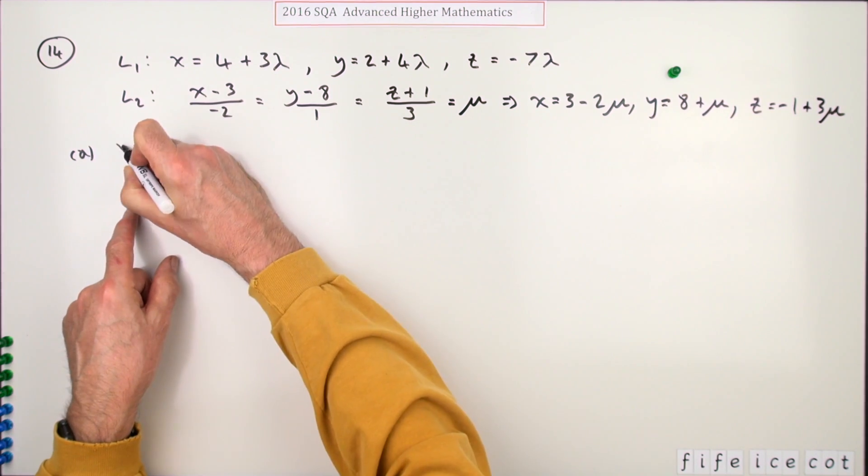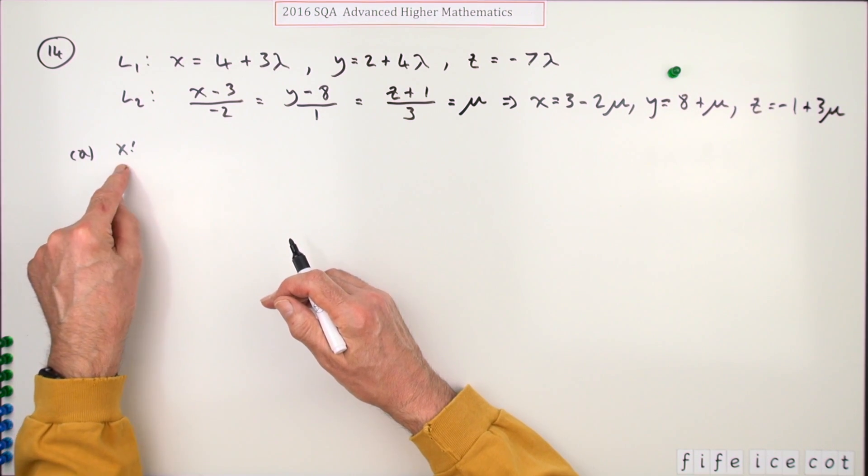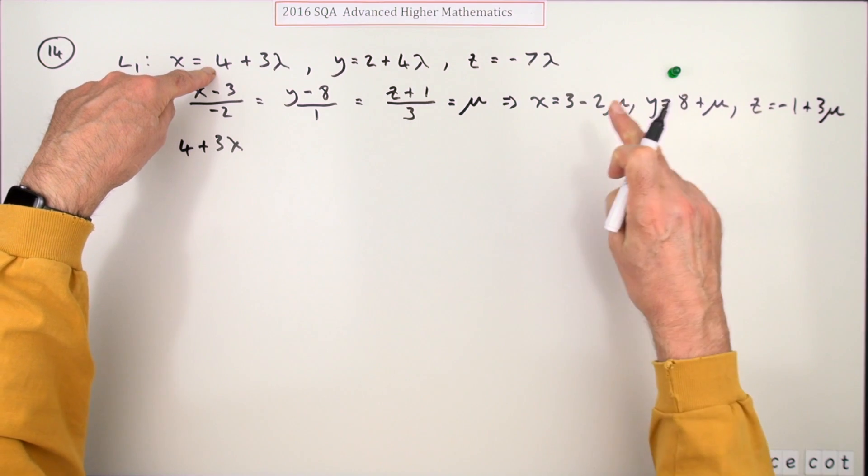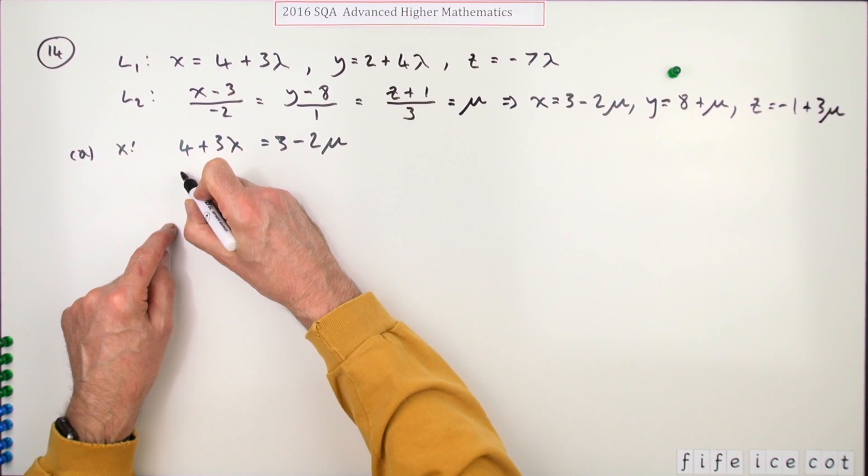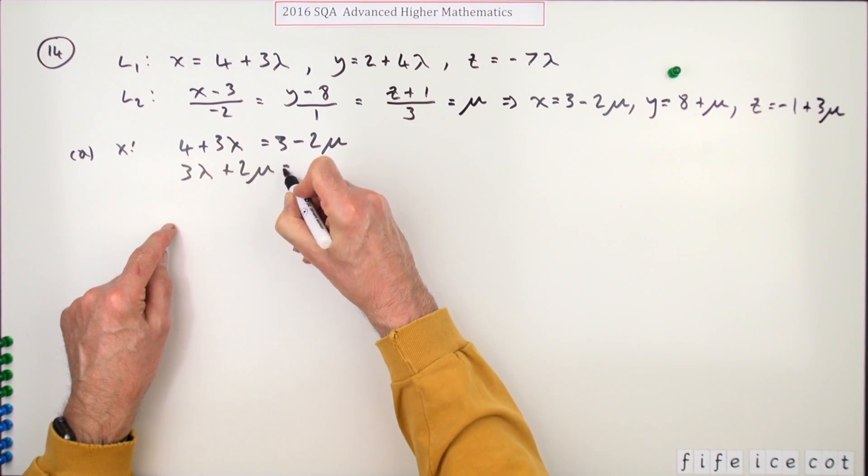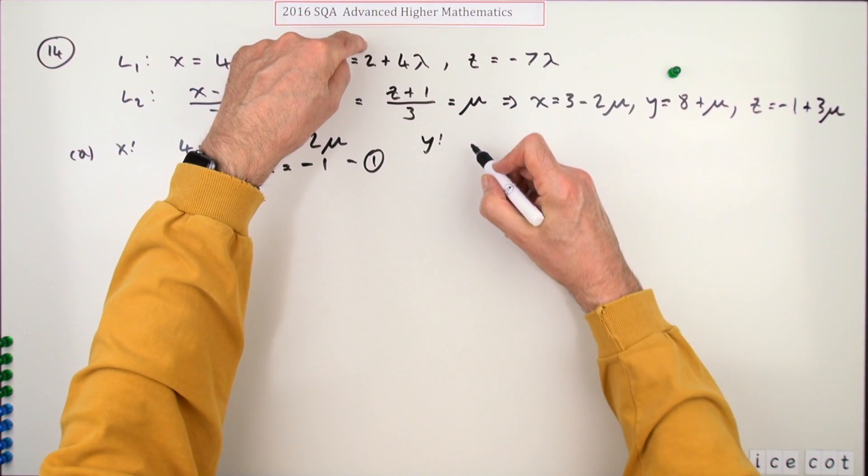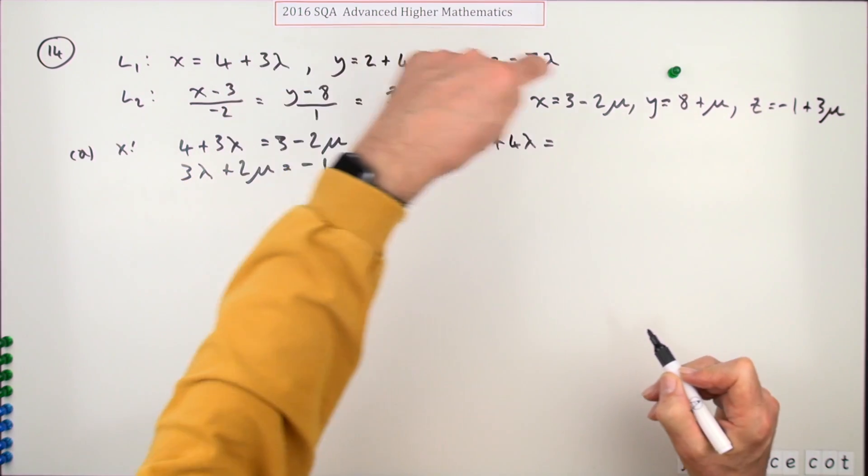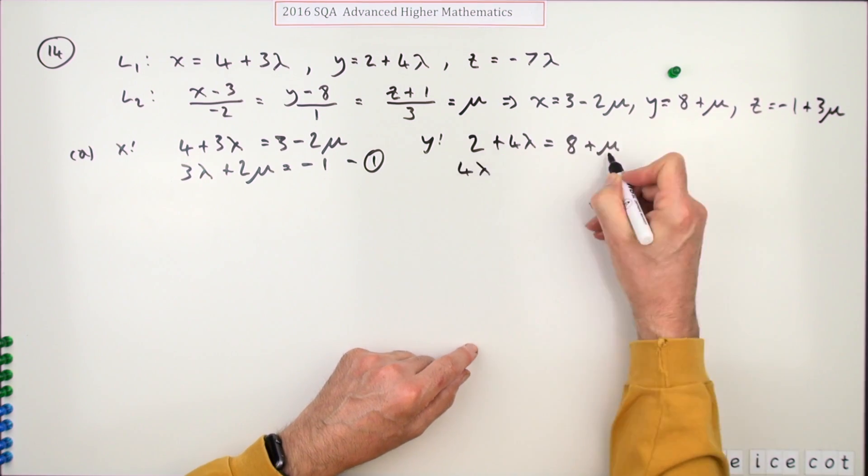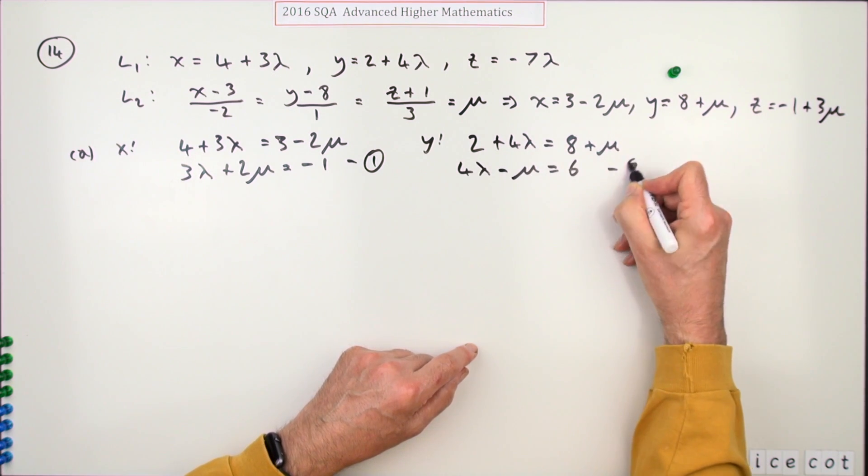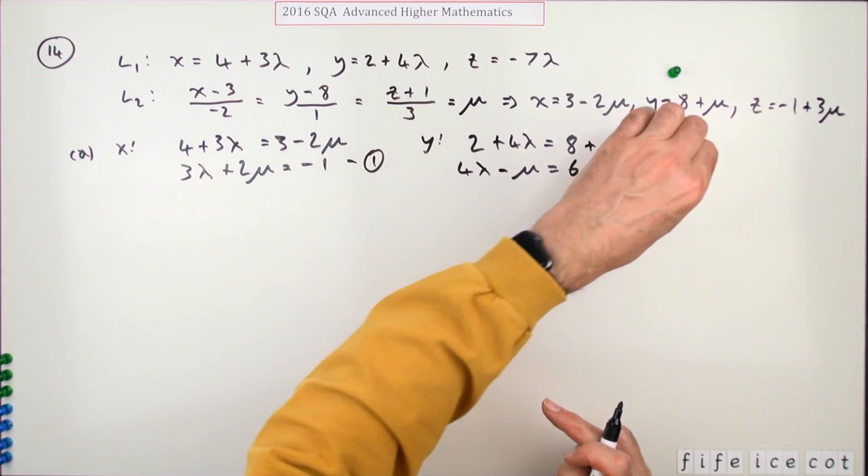Let's go ahead and find the x, y coordinates which they must share. If the x coordinates are the same, then 4 plus 3 lambda must equal 3 minus 2 mu. Rearranging that: 3 lambda plus 2 mu equals negative 1. That's one equation. What about the y coordinates? This one has 2 plus 4 lambda, and this should give the same value, 8 plus mu. So 4 lambda minus mu equals 6. There's another equation. Getting two equations in the two parameters gets you a mark.